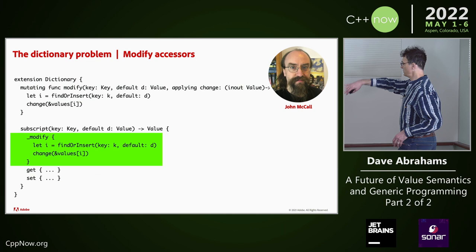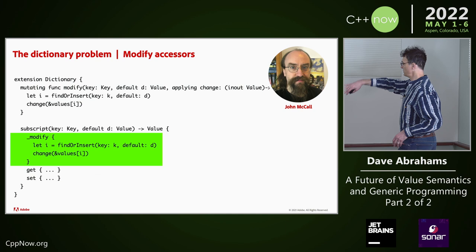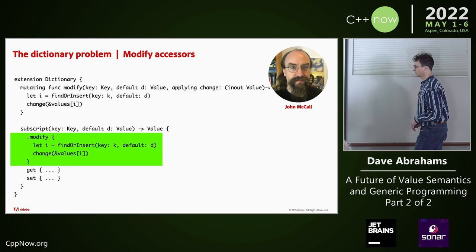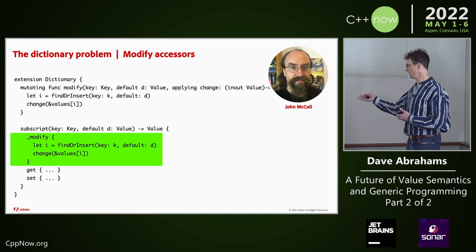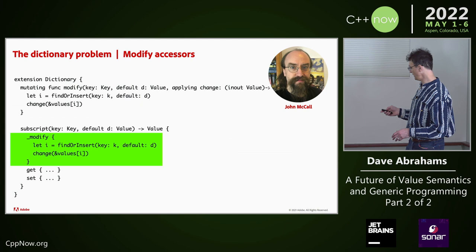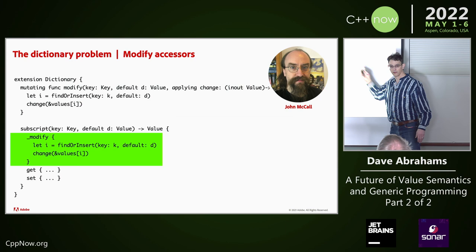We just transplant the body of this thing into modify. It's got the same parameters. Instead of a closure identifier change in scope — we could have done the same thing as we do with new value and just made a default name for the closure — John wanted to acknowledge the inversion of control that's inherent here. So he said, let's rewrite that as a yield.